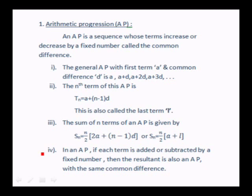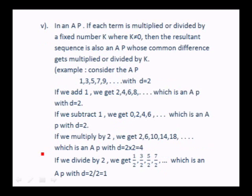In an AP, if each term is added or subtracted by a fixed number, the resultant is also an AP with the same common difference. For example, with 1, 3, 5, 7, 9 (common difference 2): adding 1 gives 2, 4, 6, 8, etc. — an AP with common difference 2; subtracting 1 gives 0, 2, 4, 6, etc. — also an AP with common difference 2.